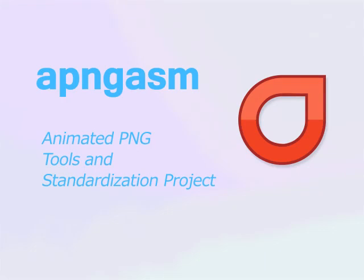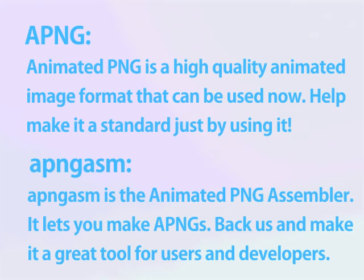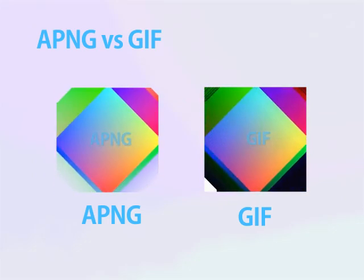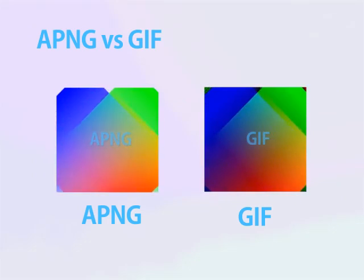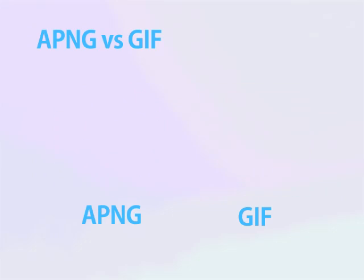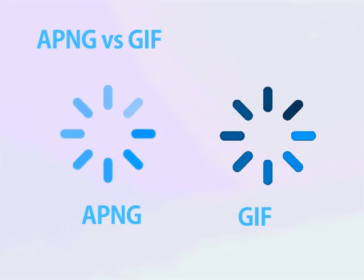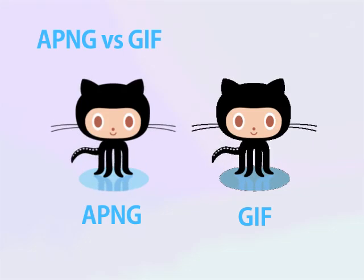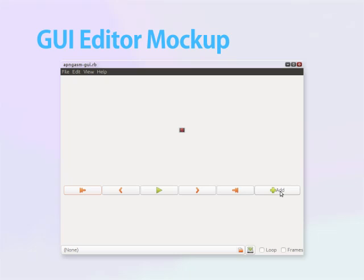Hello everybody and welcome to the Apengasm Animated PNG Tools and Standardization Project. Apengasm is the Animated PNG Assembler and it is currently the only tool that fully supports creating animated PNGs. Animated PNGs, like animated GIFs, support a full alpha spectrum for a full clean range of transparency and a full color spectrum, so you can have much cleaner, brighter, vivid images with cleaner edges and transparency.